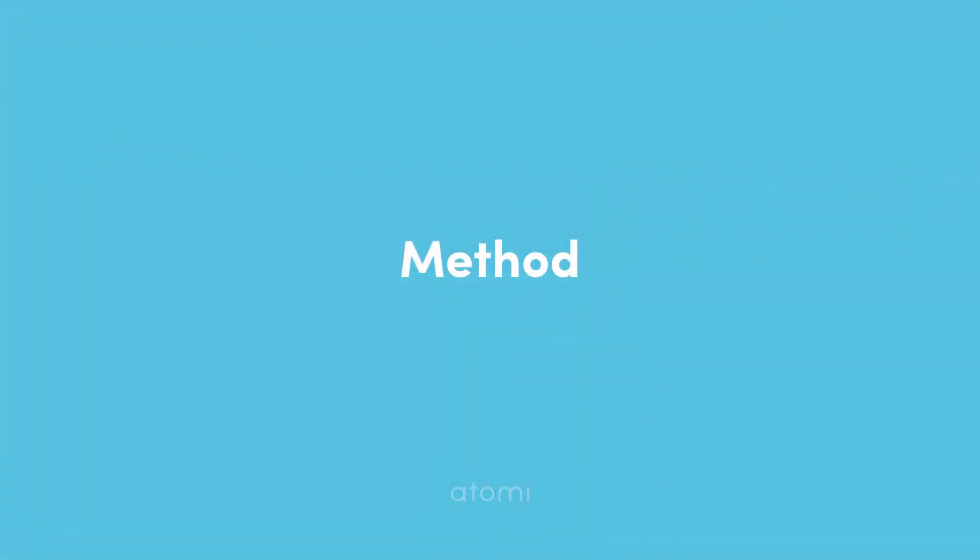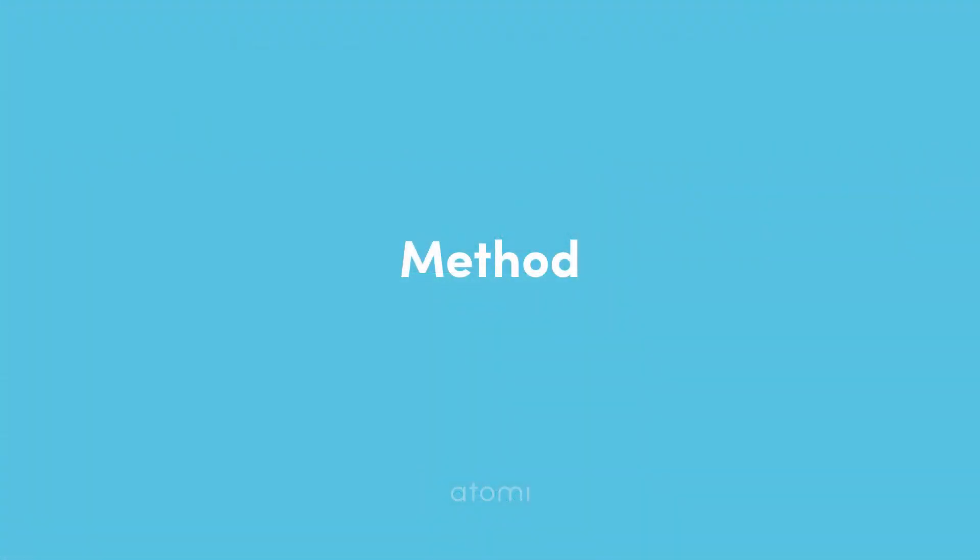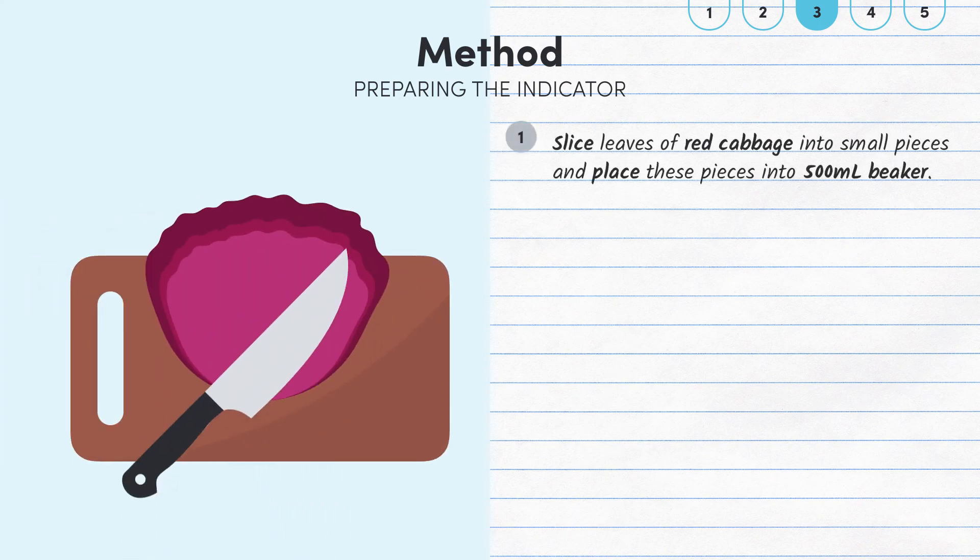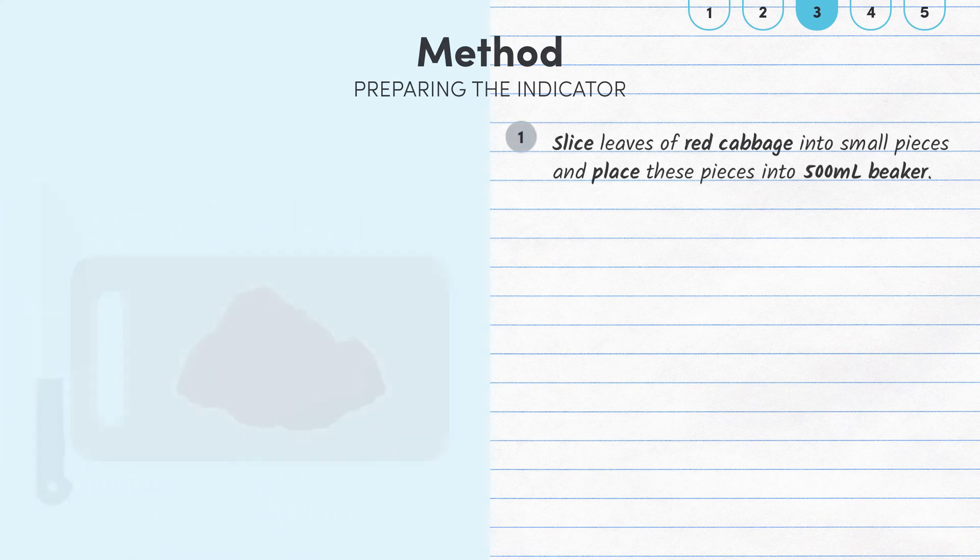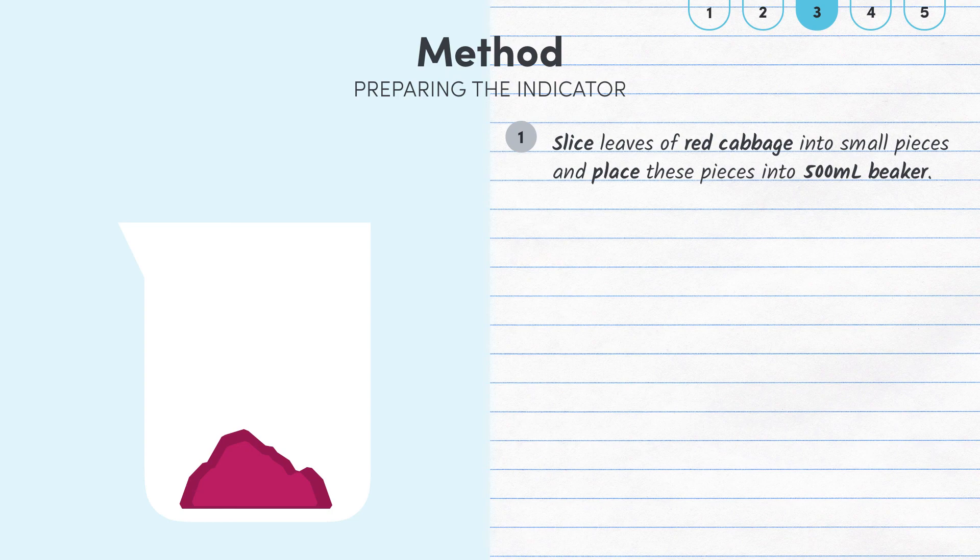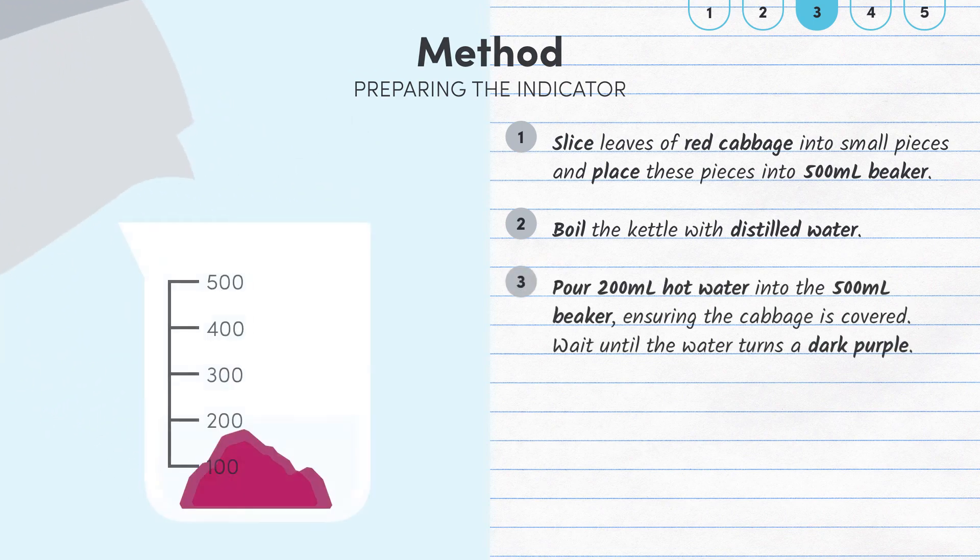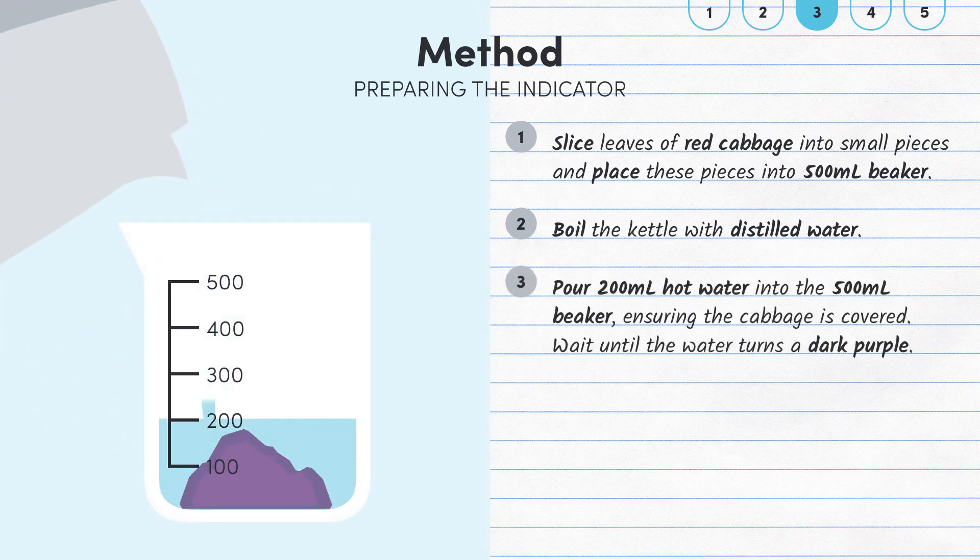So now that we've considered the hazards, risks and precautions, we can get into the method. Slice the leaves of red cabbage into small pieces and place these pieces into a 500ml beaker. Boil the kettle with distilled water. Once the water has boiled, pour around 200ml of hot water into the 500ml beaker, ensuring the pieces of red cabbage are covered. Wait until the water turns a dark purple colour.